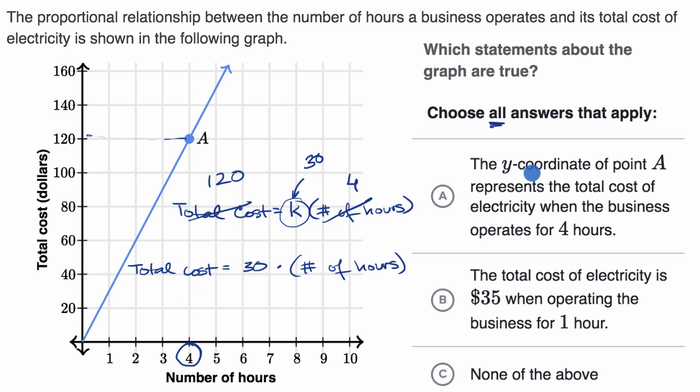So choice A, the y-coordinate of point A - so point A is at the point four comma 120, so the y-coordinate is the 120. That's the total cost when you run your business for four hours. The y-coordinate of point A represents the total cost of electricity when the business operates for four hours. Yes, that is exactly or very close to what I just said. So I like this one.